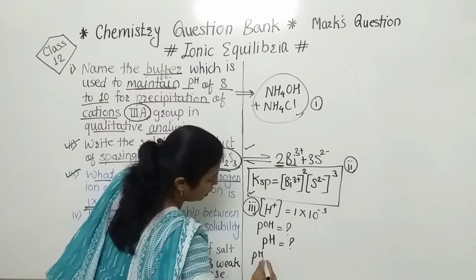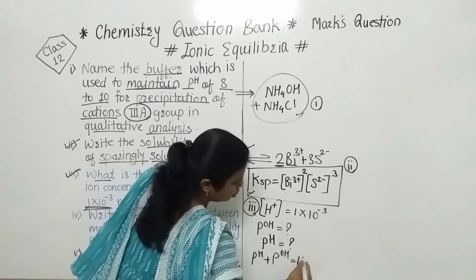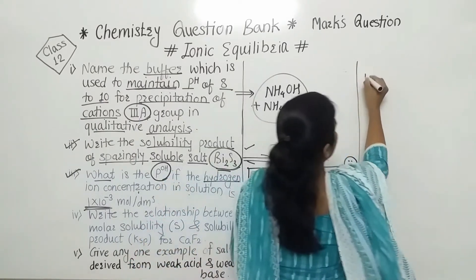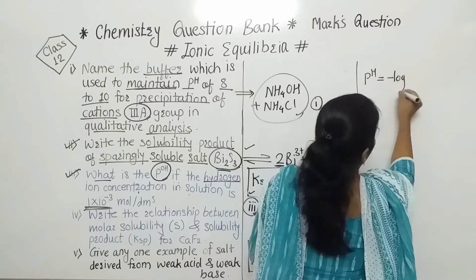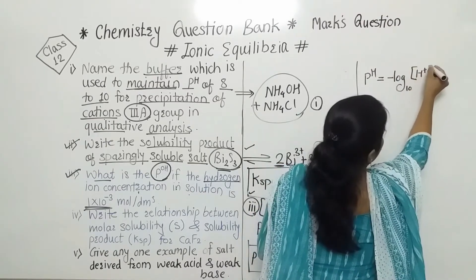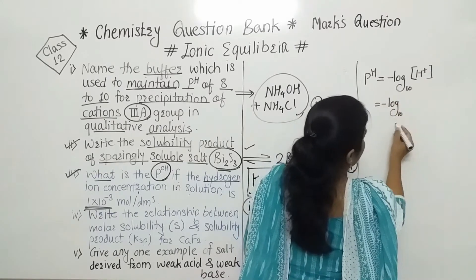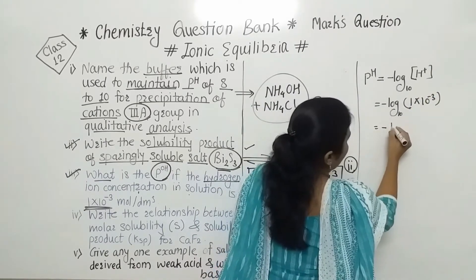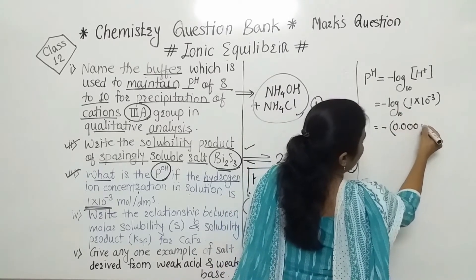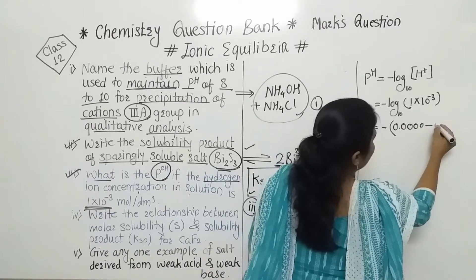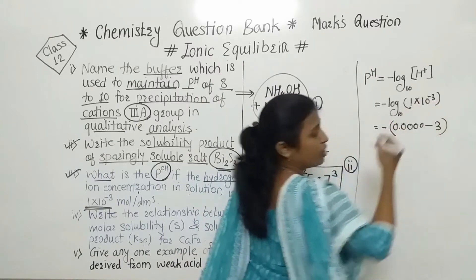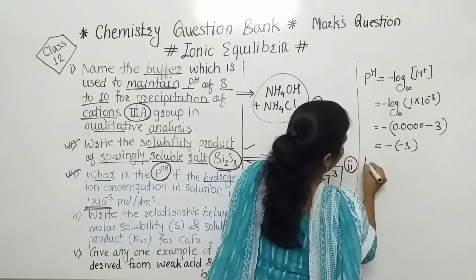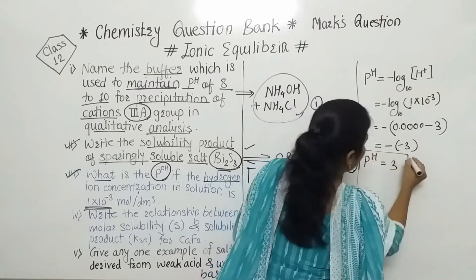As they have given the hydrogen ion concentration, we can calculate the pH, and by using that pH we use the formula: pH + POH = 14. Finally from that formula we can find out the POH. The formula for pH is: pH = −log₁₀[H⁺]. So pH = −log₁₀(1×10⁻³). The log value of 1 is 0, and log of 10⁻³ gives us −3, so minus times −3 gives pH = 3.